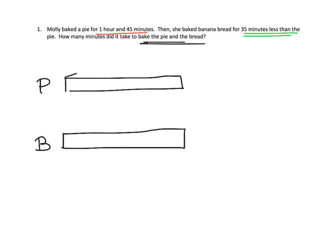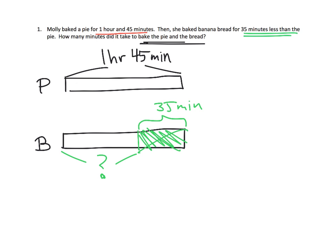But then, we can go in and say that the pie is an hour, 45 minutes. Alright? But then, here's the thing. It says, then she baked the banana bread for 35 minutes less than the pie. So, really, this bread tape diagram needs to be shorter by 35 minutes. We're gonna cross this off and say it's 35 minutes.